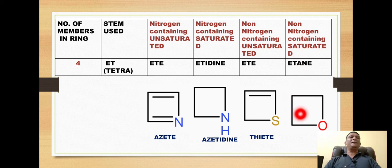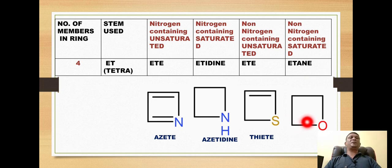For example, a sulfur-containing unsaturated four-membered ring becomes 'thiete'. For an oxygen-containing completely saturated four-membered ring, the name is 'oxetane'.